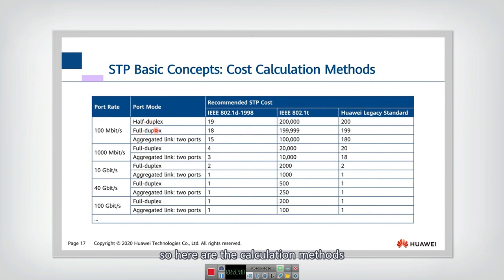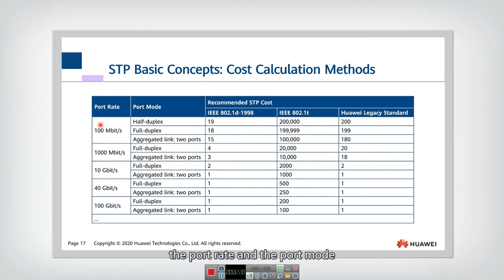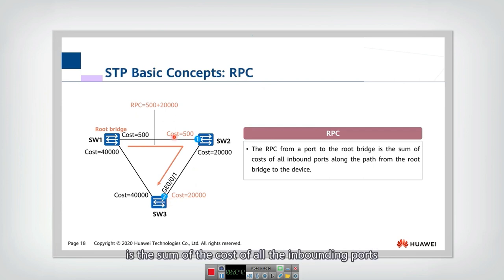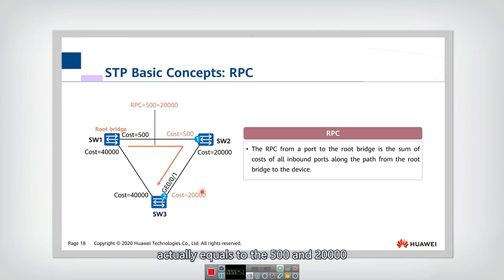There are three different calculation methods, and we can see the corresponding cost for each. The cost depends on the port rate and the port mode — whether it is half duplex, full duplex, or an aggregated link. When we know the link cost, we can calculate the root path cost, which is the sum of the costs of all inbound ports along the path. For example, the root path cost of this path equals 520,000.